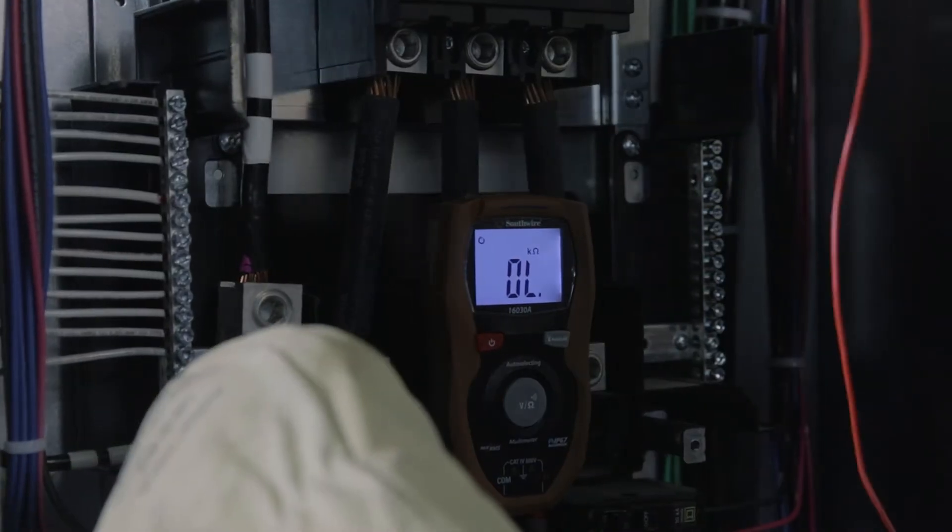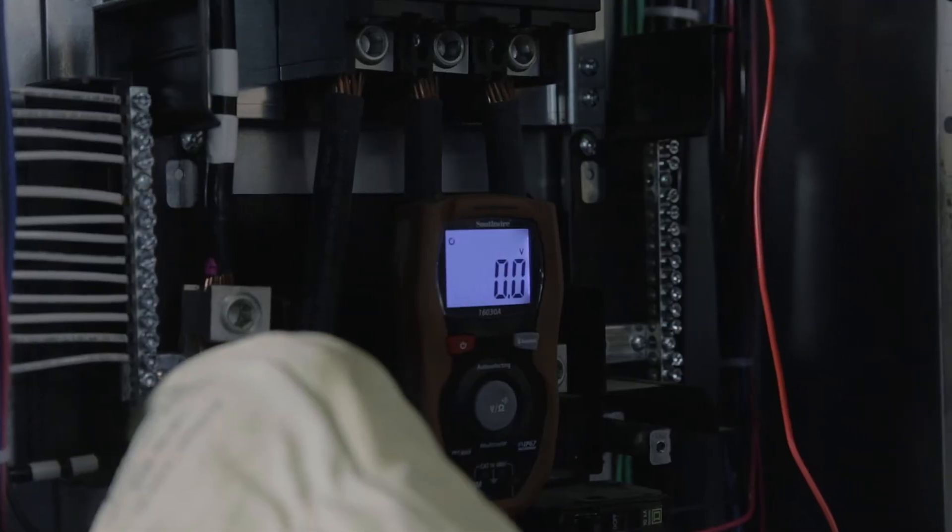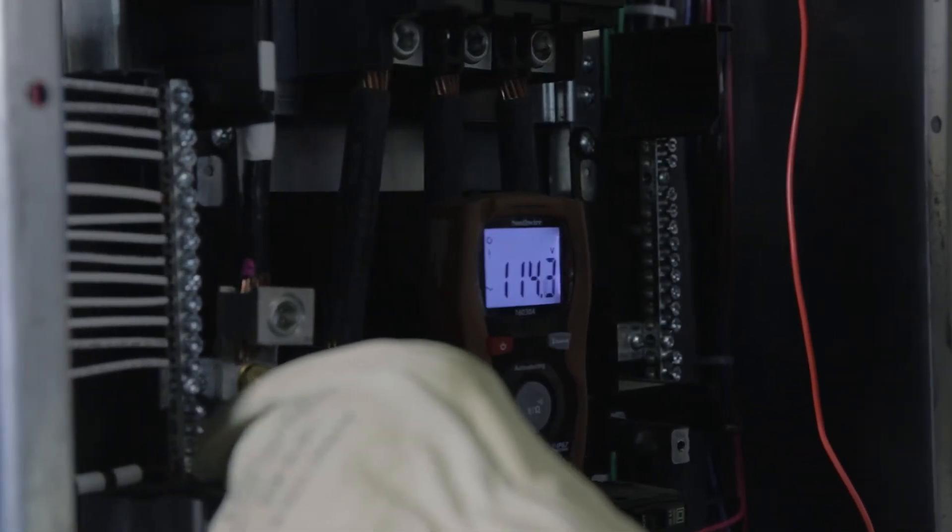Just turn it on and connect the leads. The meter automatically switches to voltage if the circuit is live.